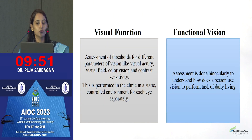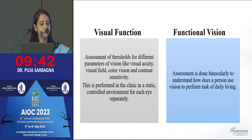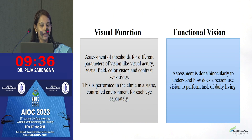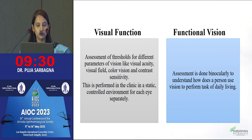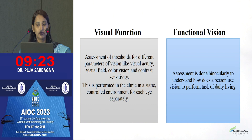So what is visual function and what is functional vision? Visual function means visual acuity, color vision, visual field, and contrast sensitivity — and we check these uniocularly. Functional vision refers to how the child is doing binocularly and how the child performs their daily living activities. That is functional vision.